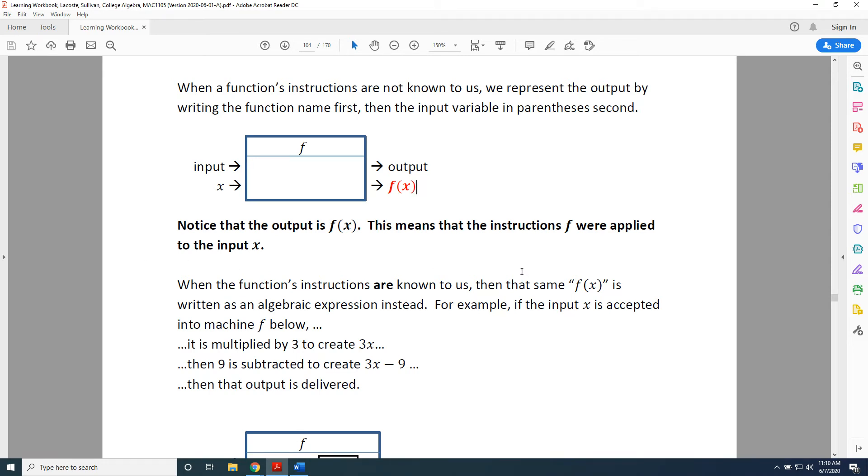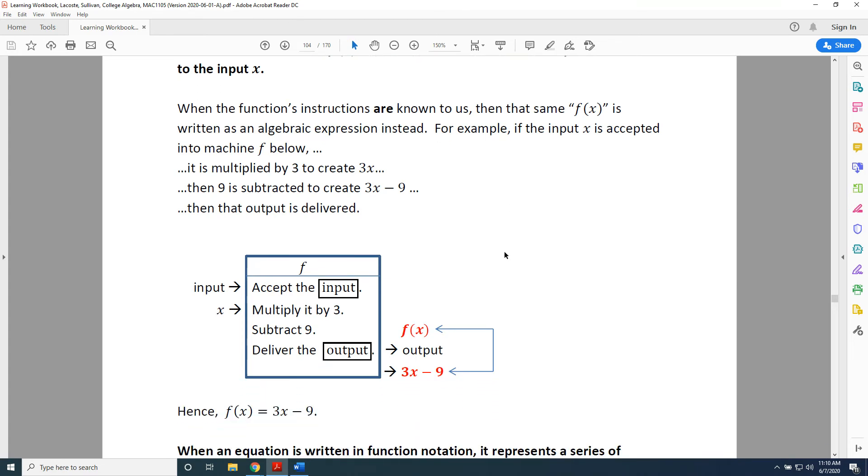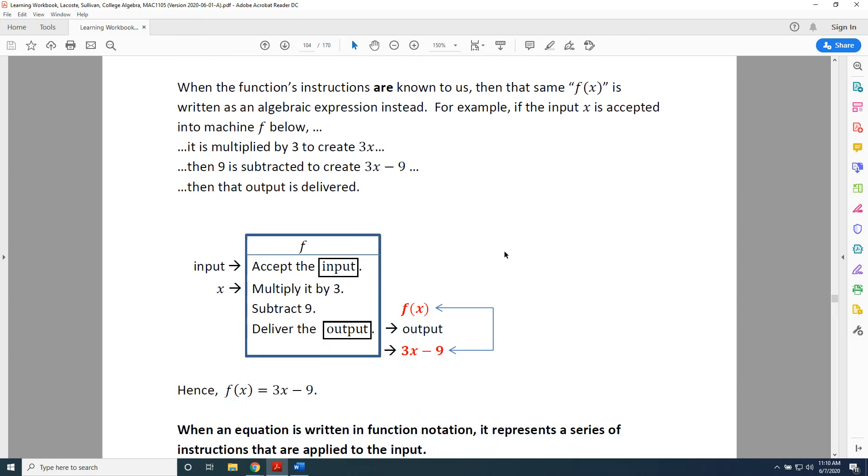When the function's instructions are known to us, then that same f of x is written as an algebraic expression instead. For example, if the input x is accepted into a machine f below, it is multiplied by 3 to create 3x, then 9 is subtracted to create 3x subtract 9, then that output is delivered.